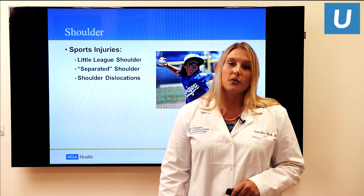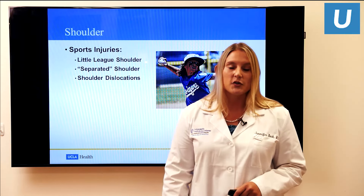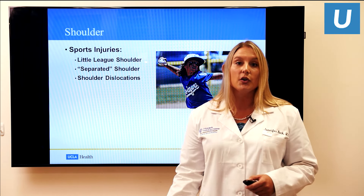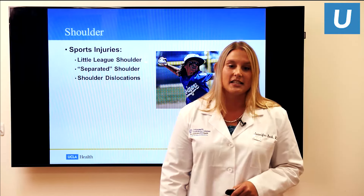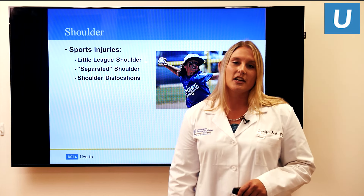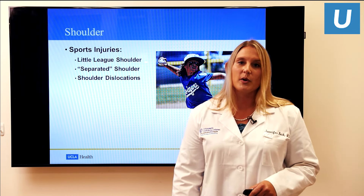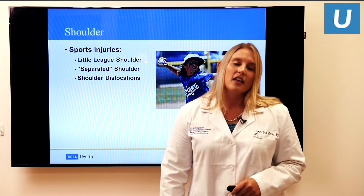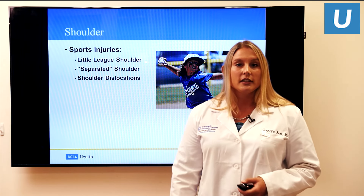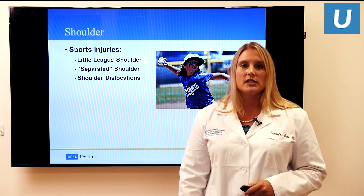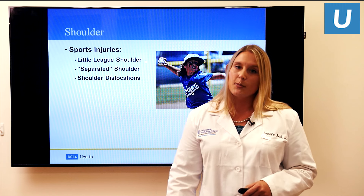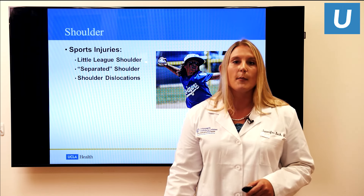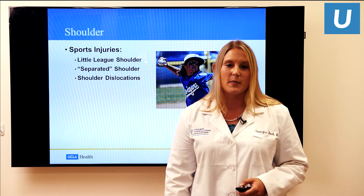Starting with the upper extremity — the shoulder — which is a very common thing we're seeing these days, especially here in Southern California with all our baseball players, water polo players, and volleyball players. There are three different topics we're going to go over: little league shoulder, and then the difference between a separated shoulder and a shoulder dislocation, which is commonly confused by a lot of patients and parents.